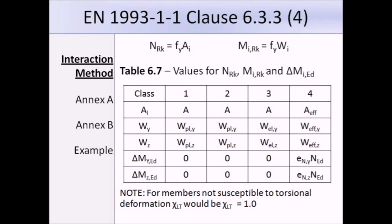This is Table 6.7 from Eurocode 3, and it gives us the values of the terms needed to work out NRK, MIRK and DELTA MIED. At the top, you can see that NRK equals FY times AI, and MIRK equals FY times WI. The values in the table depend on the class of the section. Class 1 and 2 use plastic modulus values WPLY and WPLZ, whereas class 3 uses the elastic modulus values, and class 4 the effective modulus values.